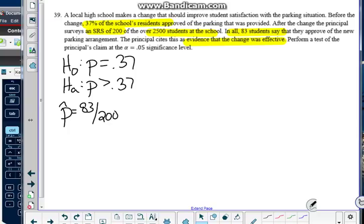Okay. My confidence or my significance level is 0.05 given to me in the problem as well. Alpha equals 0.05.